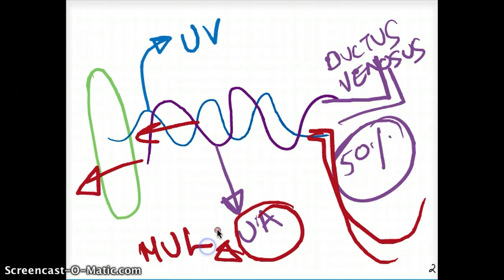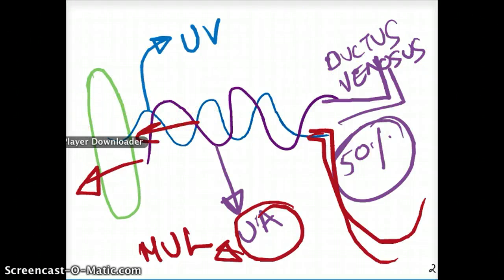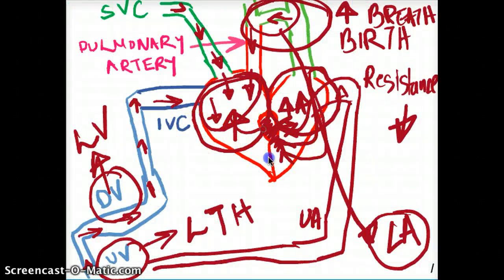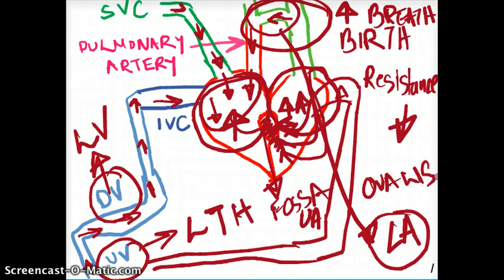It's the medial umbilical ligament — medial with an L at the end — because there is also the median umbilical ligament, so those can get a little confusing. The umbilical artery forms the medial umbilical ligament. Finally, the foramen ovale is now going to be called the fossa ovalis. And that's all for fetal circulation.